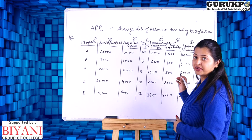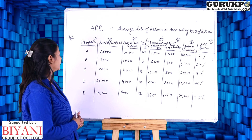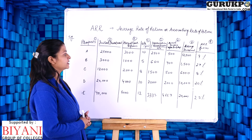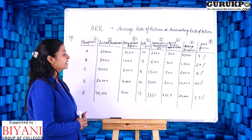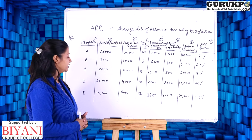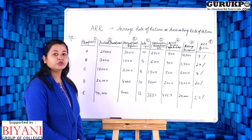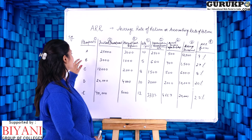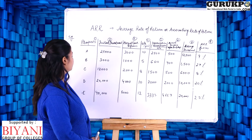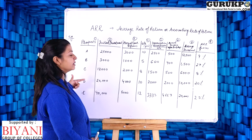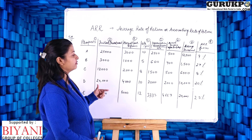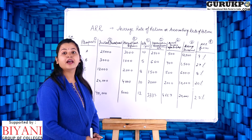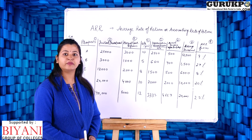So the average rate of return results are: Project A = 4%, B = 27%, C = 8%, D = 20%, and E = 23%. The maximum average rate of return is for project B, so it is ranked 1st. Project E is ranked 2nd, D is ranked 3rd, C is ranked 4th, and A is ranked 5th, according to average rate of return for investment proposals.